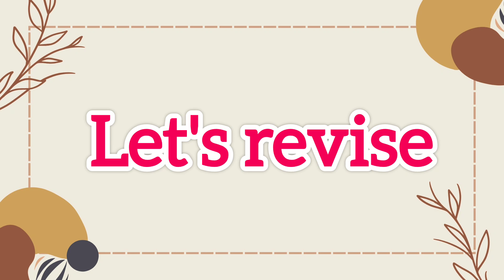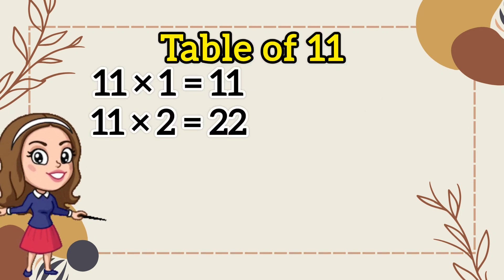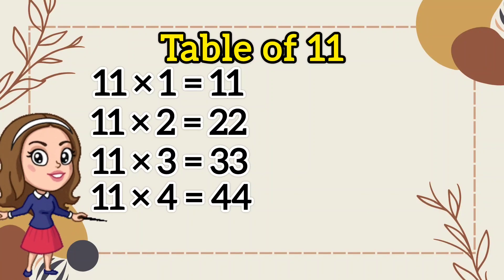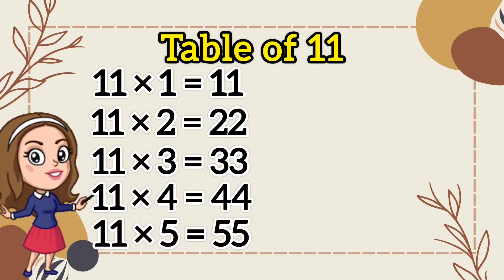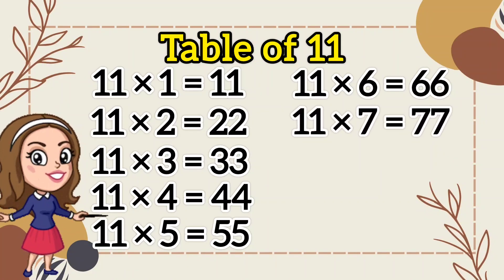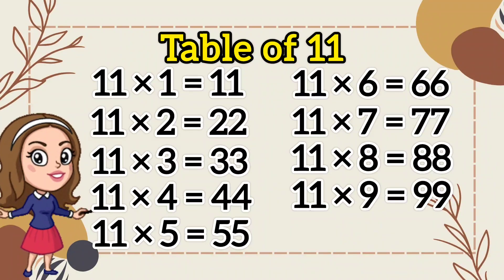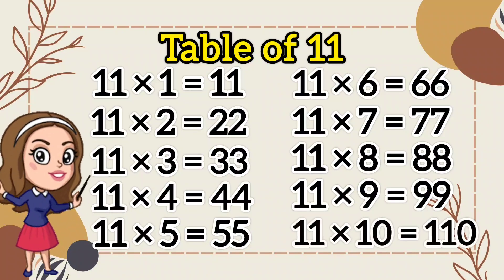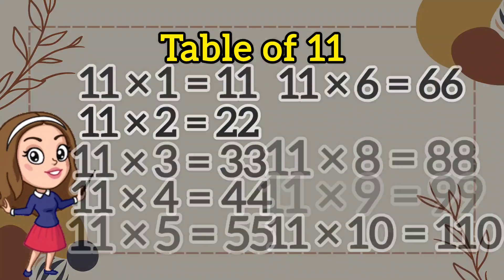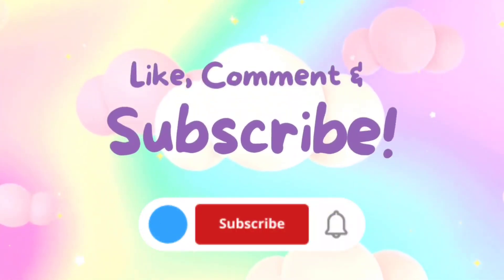Now, let's revise together. 11 ones are 11, 11 twos are 22, 11 threes are 33, 11 fours are 44, 11 fives are 55, 11 sixes are 66, 11 sevens are 77, 11 eights are 88, 11 nines are 99, 11 tens are 110.